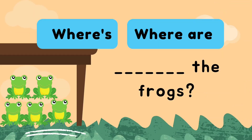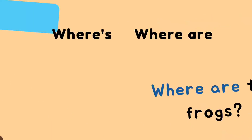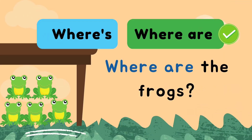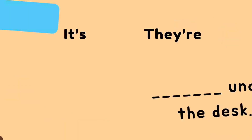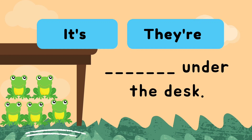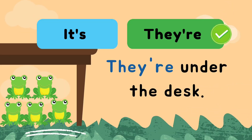Where's the frog or where are the frogs? How many frogs do you see? Well, there are five frogs, so we use where are the frogs. And it's under the desk or they're under the desk? The answer is they're under the desk. We use there because there are five frogs.